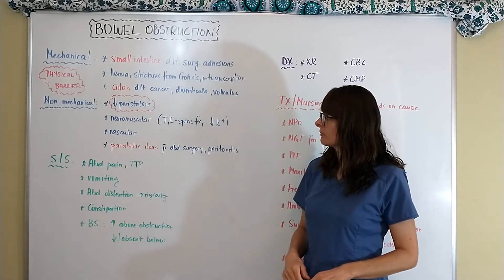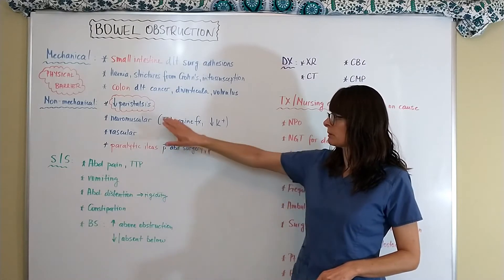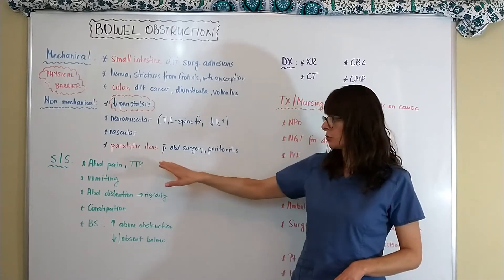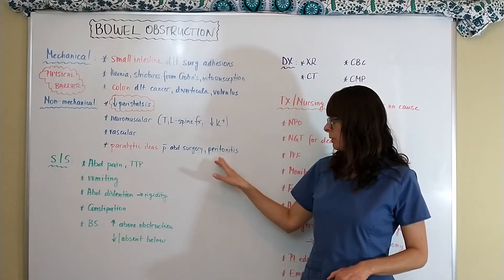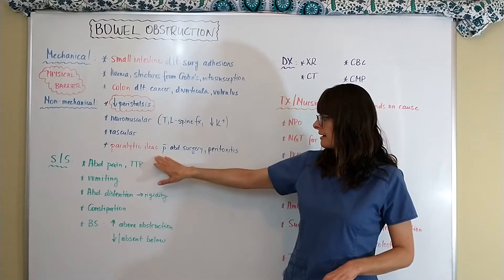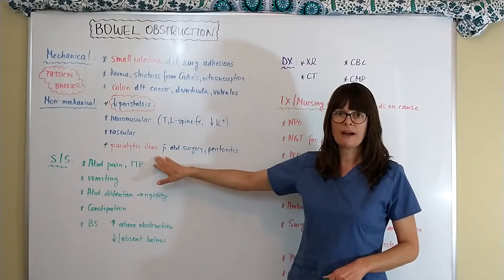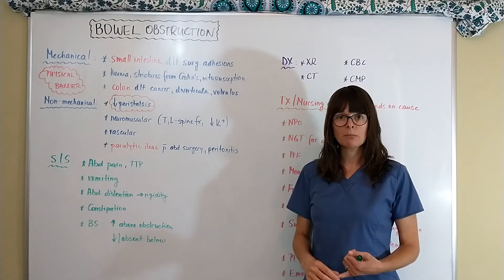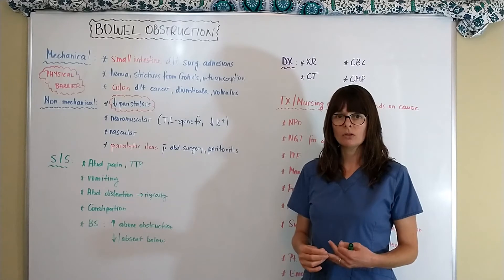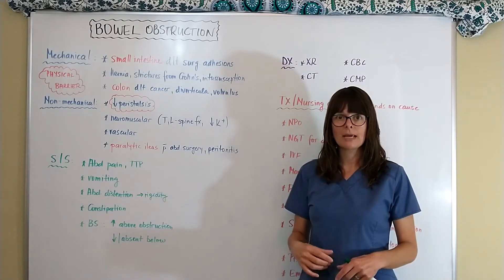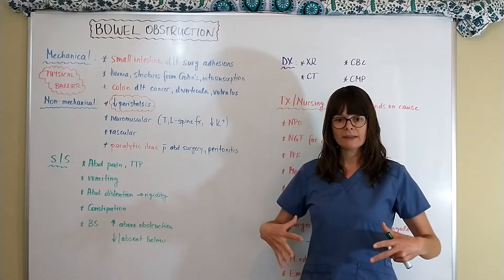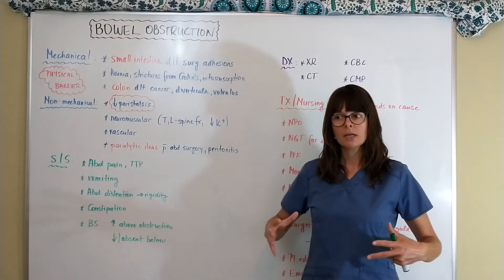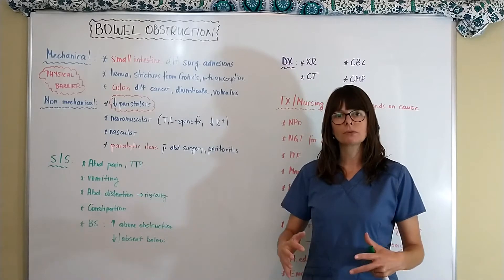Non-mechanical obstructions occur because of decreased peristalsis, and the most common one is paralytic ileus, which occurs after abdominal surgery or due to peritonitis. Decreased peristalsis after paralytic ileus happens because the anesthesia slows everything down, the patient has been NPO, and there has been interference with the intestinal system. Ileus basically means the digestive system is paralyzed — the propulsion of food is not working.